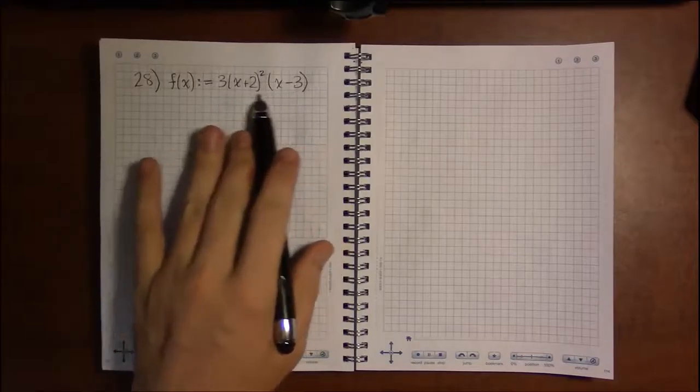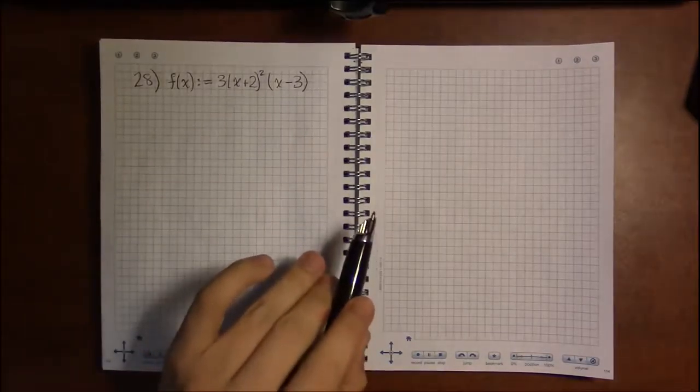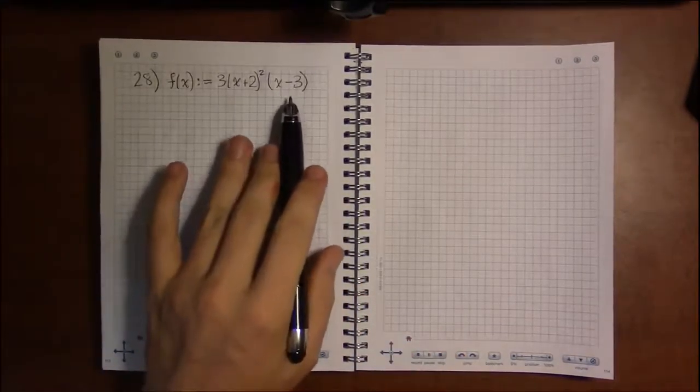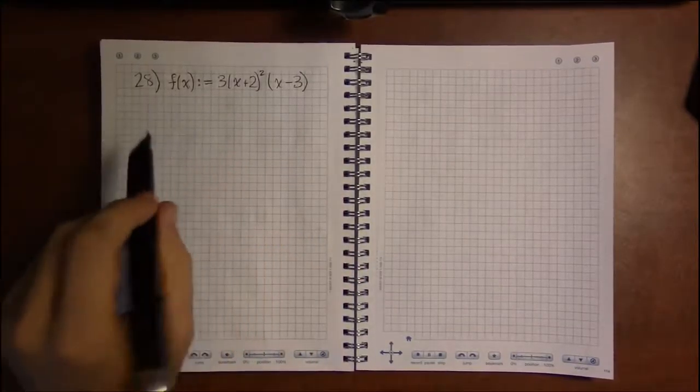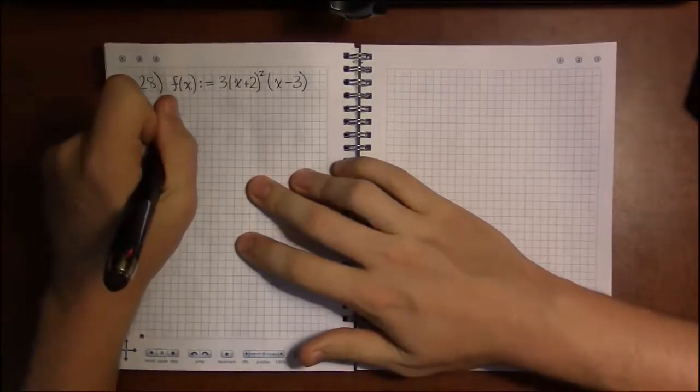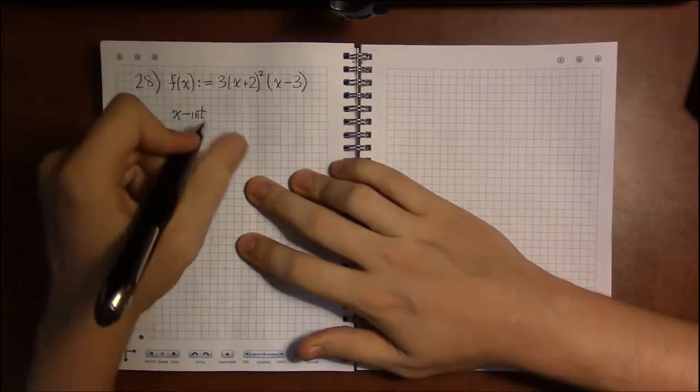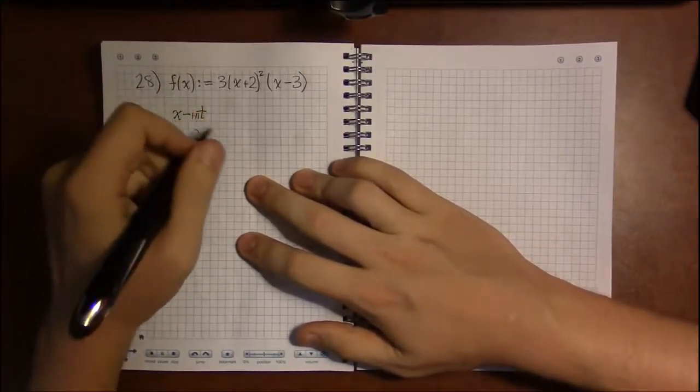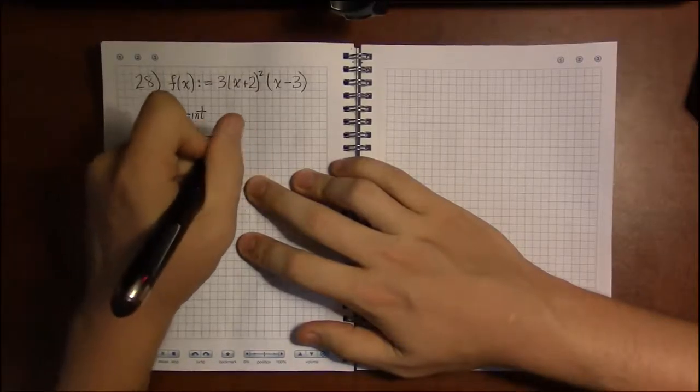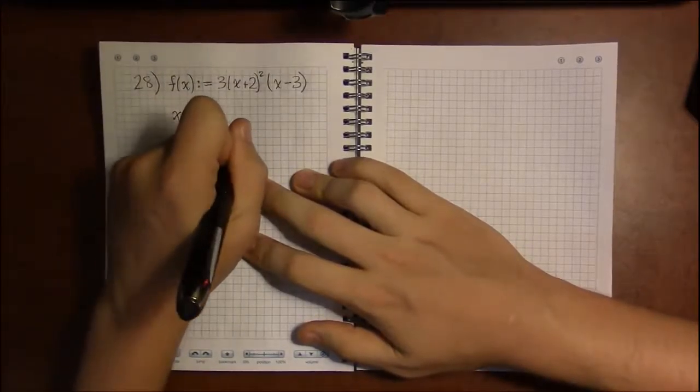So this is our polynomial. It's factored as much as it could possibly be factored. If we're going to look for the x-intercepts, then we're going to set y, or f(x), to be 0, and we're going to try to solve.